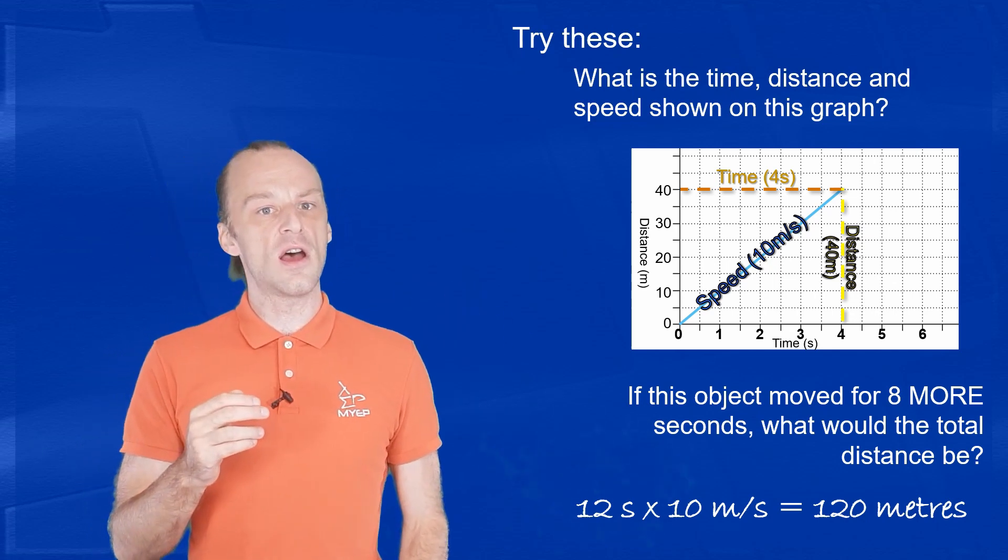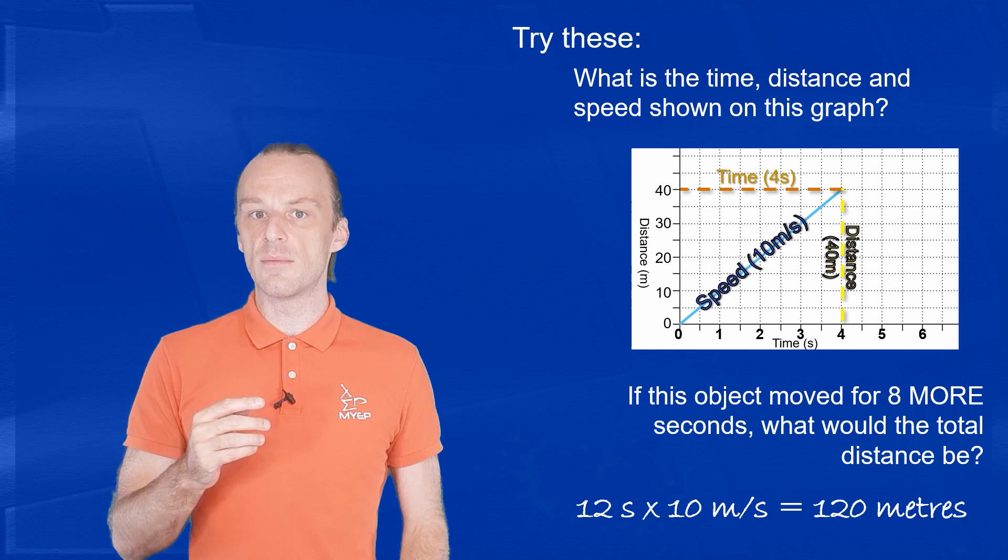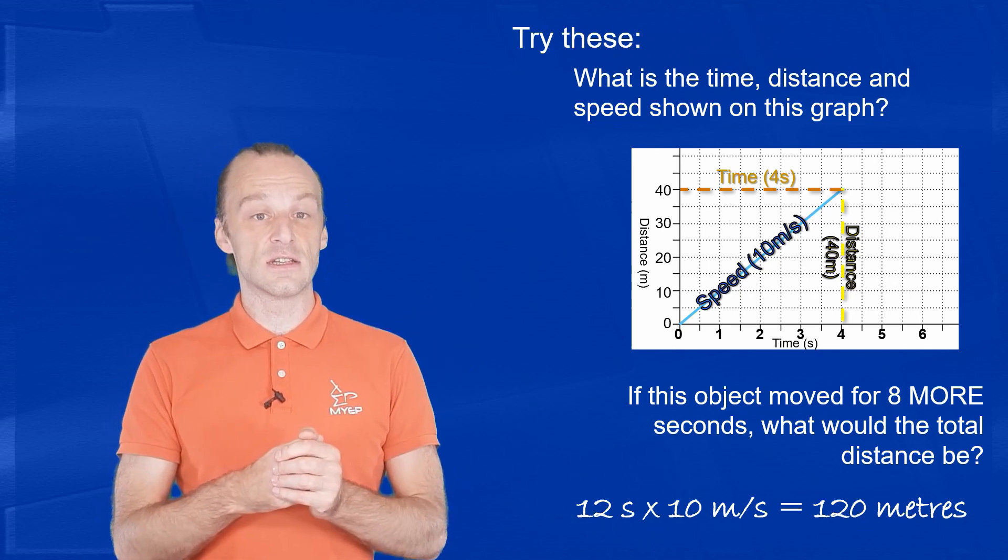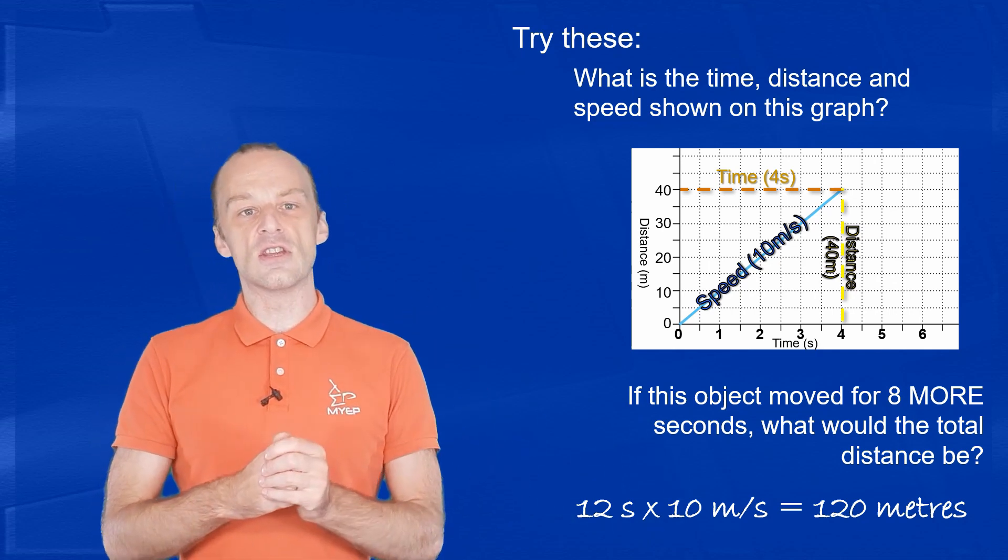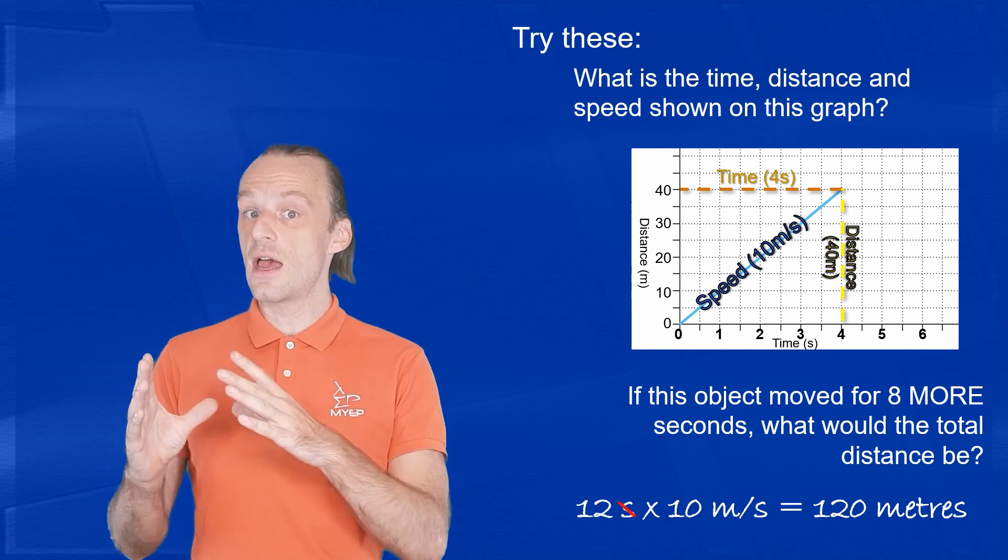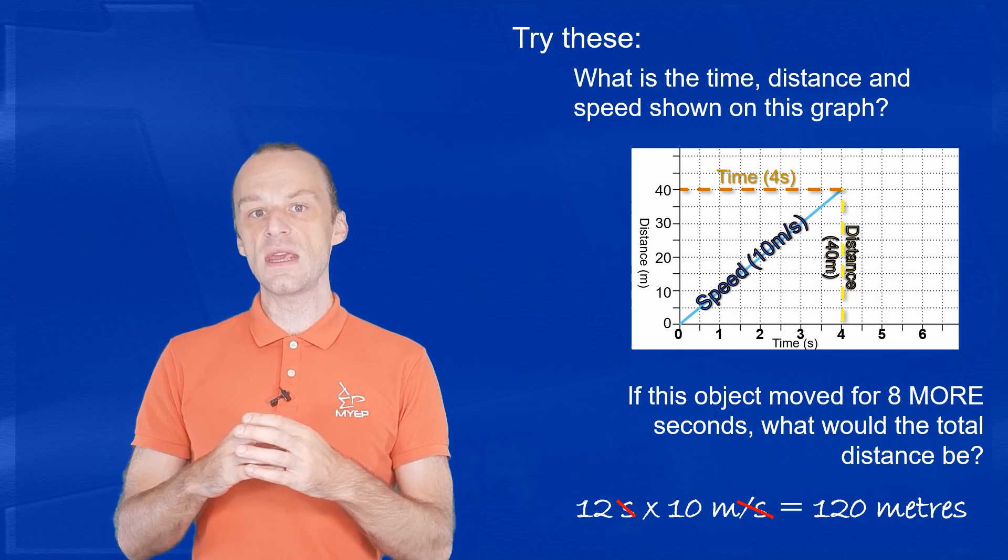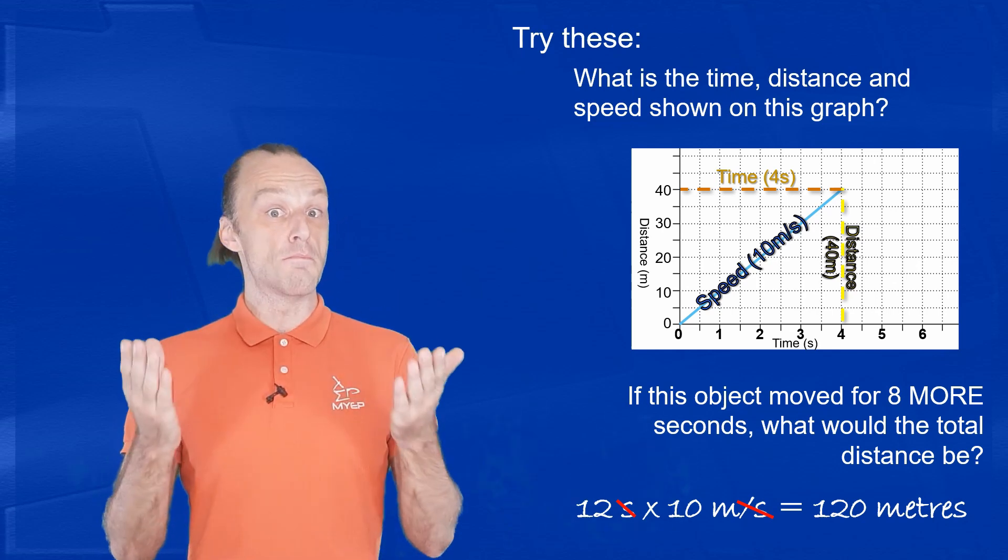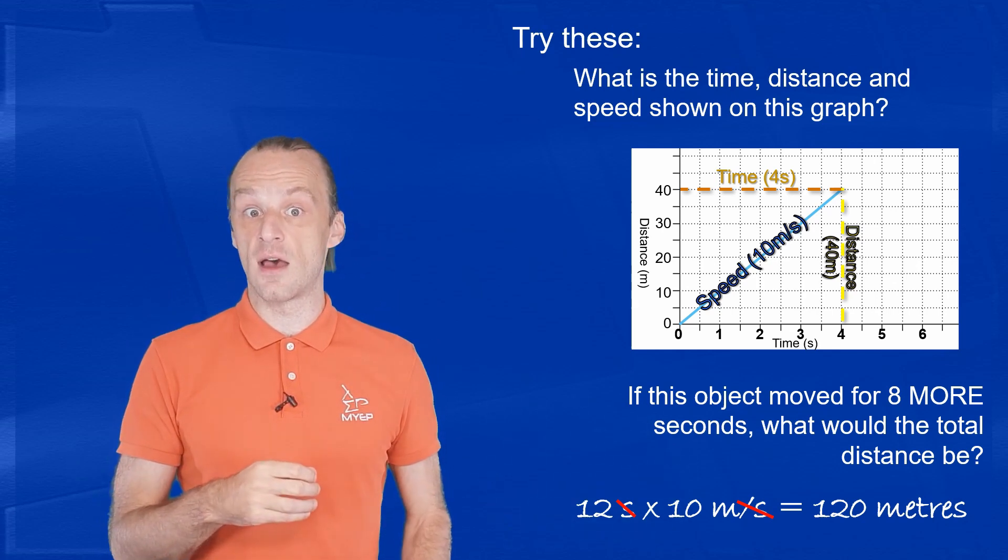We could see that on the graph if we continued the line up, and if we had space to plot it. If you look carefully at the units on this calculation, you can see that the seconds of time cancel with the per seconds of speed, and so we're left with just meters of distance for our answer.